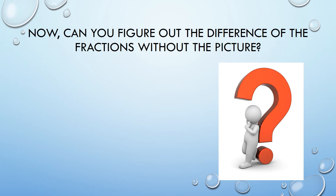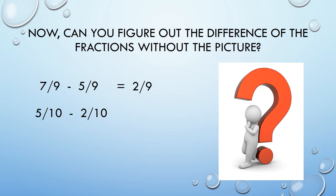Now, can you figure out the difference of the fractions without the pictures? Let's see. If I have seven-ninths and I take away five-ninths, what do I have left? Two-ninths. What is five-tenths take away two-tenths? That's three-tenths. What is four-eighths take away one-eighth? That gives you three-eighths.